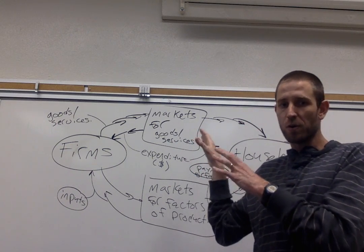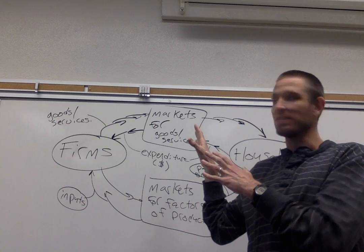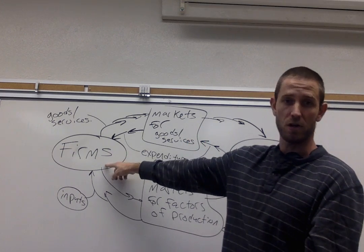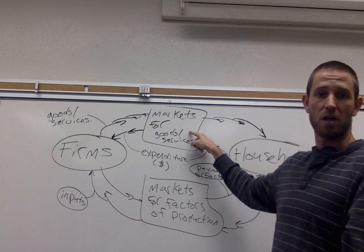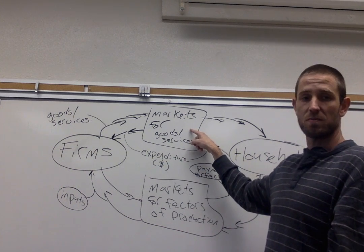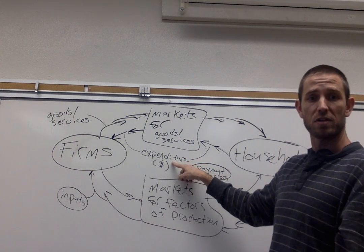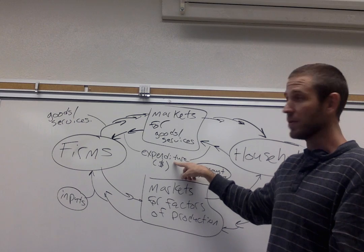The circular flow diagram is just putting labels to that general process. You can see that going from households to firms through the channel of goods and services markets or product markets, we give them money. So that's expenditure on goods and services. You're going to want to know that label.